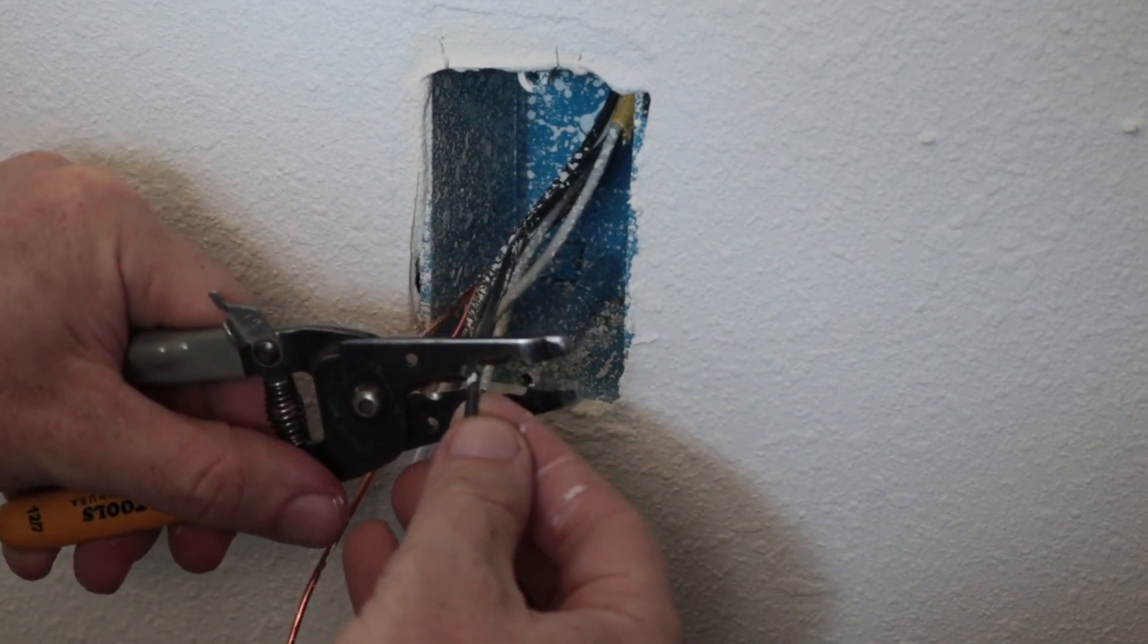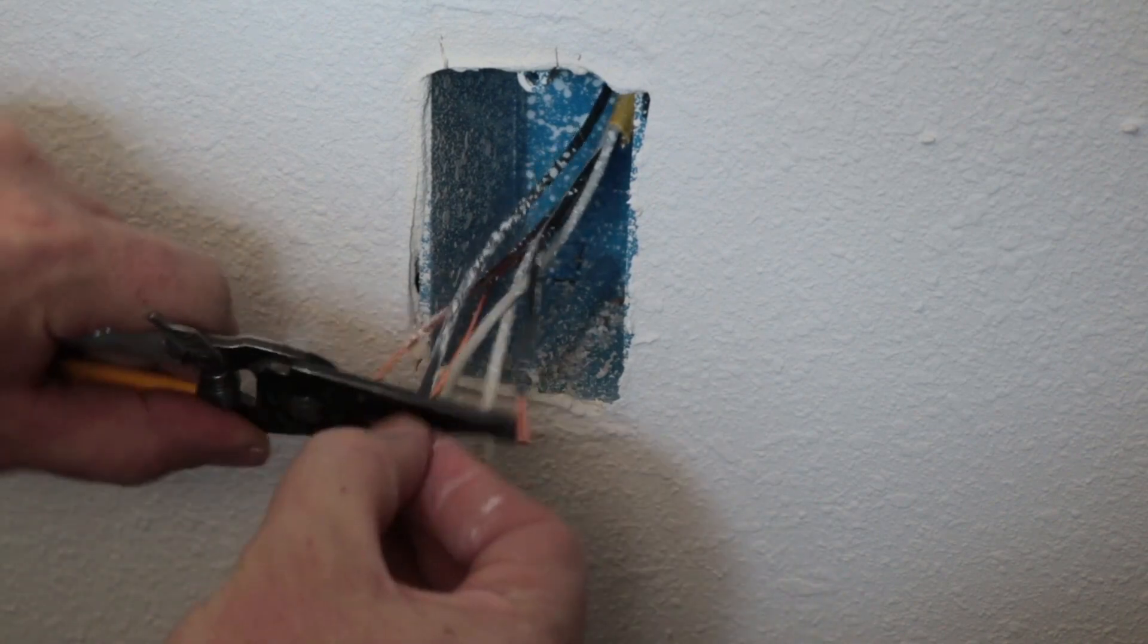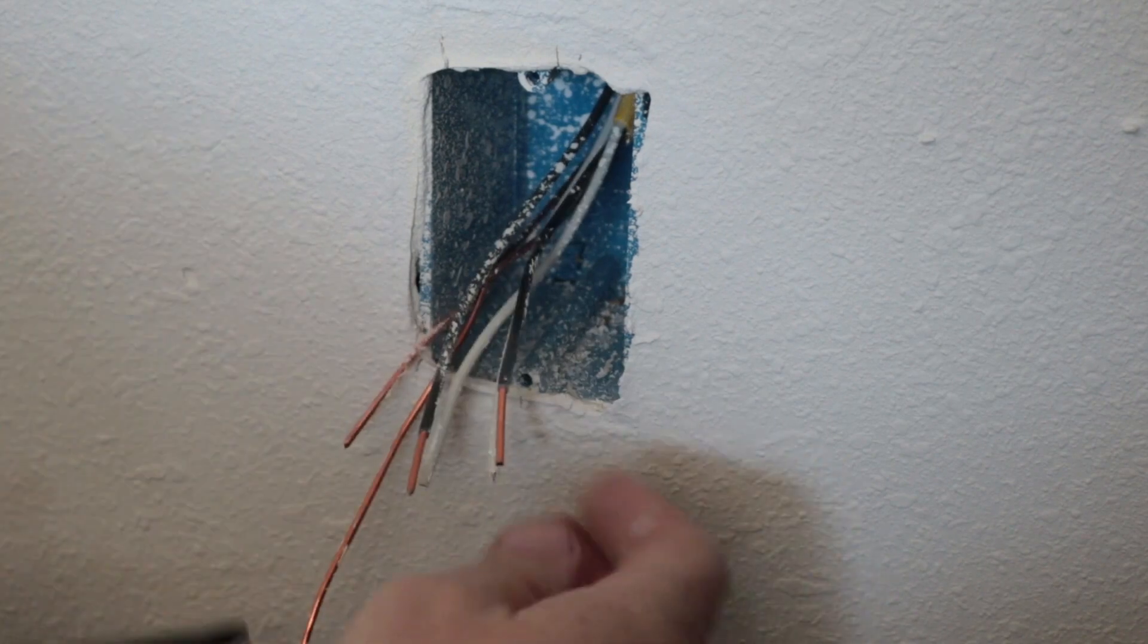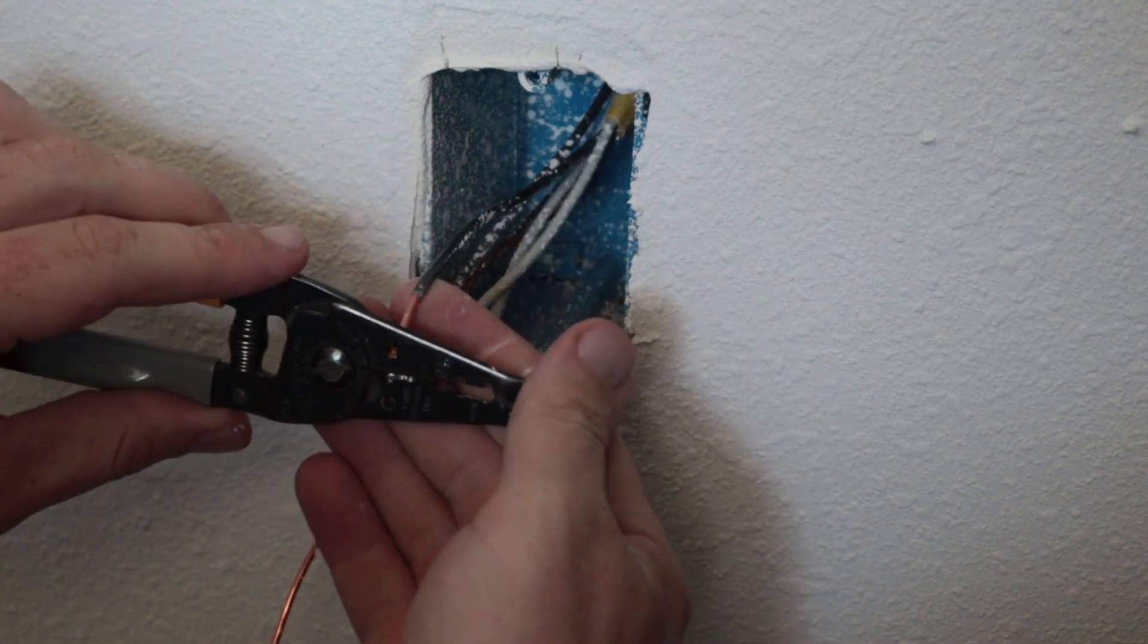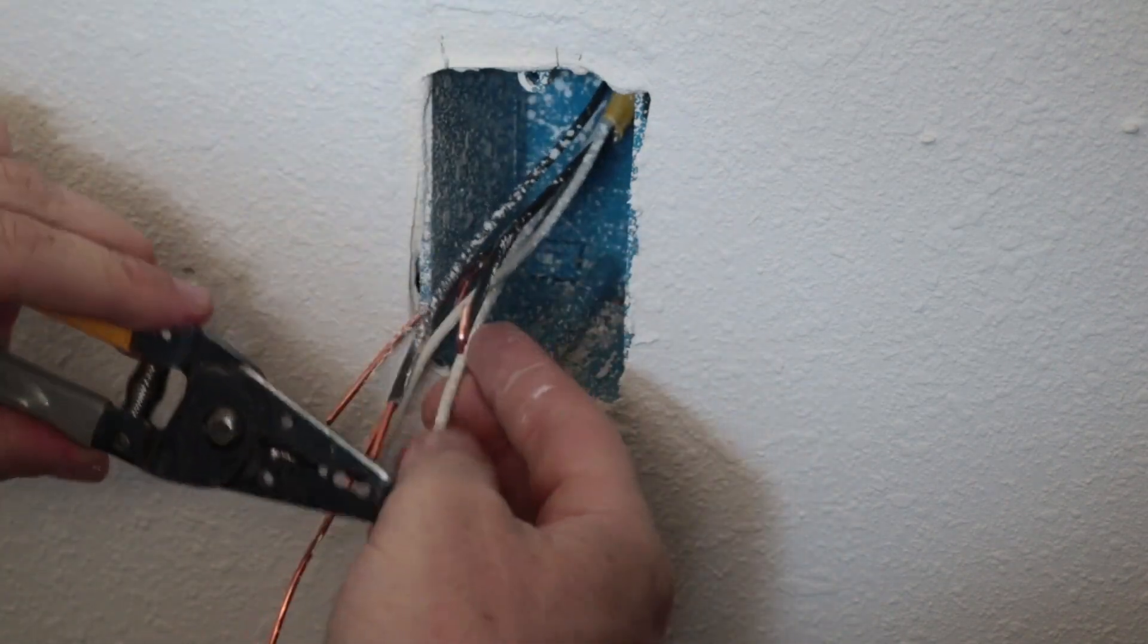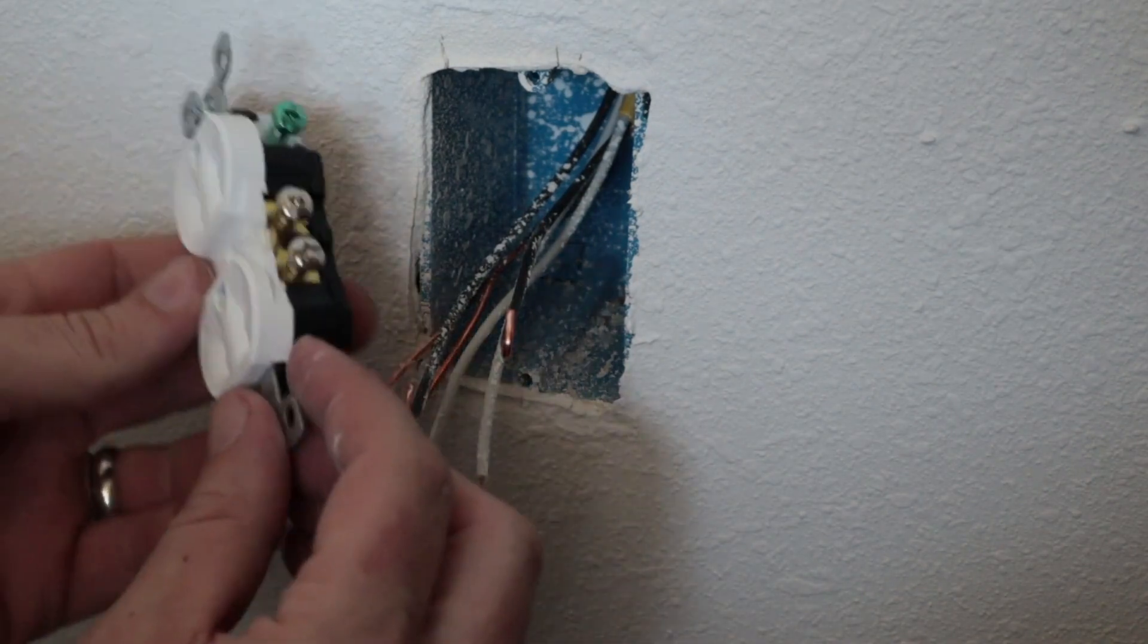And then we'll just strip the black wire here. Strip it about one inch. And then you take this circle here on the tool and you just bend it over like this. And that's going to create a nice loop that we can put on the screw of the outlet.